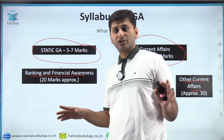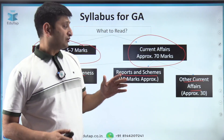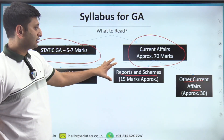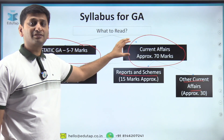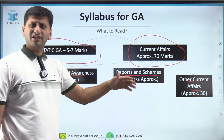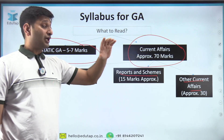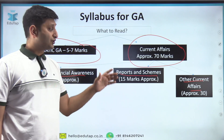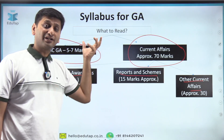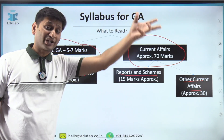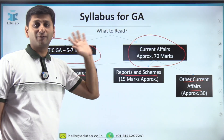A common mistake students make is preparing current affairs for RBI the same way they do for IBPS or SBI. The current affairs for RBI are completely different. You have to read specific sources for this exam. Sources used for other banking exams will not work here.